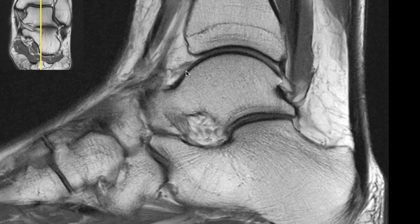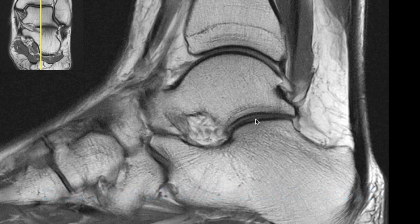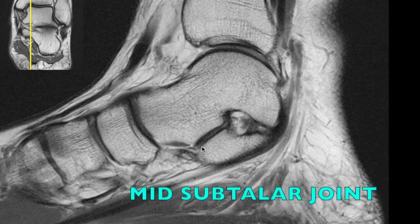Going further towards the midline, you can see the tibia articulating with the talus and the talus articulating with the calcaneum — this is the tibiotalar joint. The gray colored zone is the tibiotalar cartilage. This is the subtalar joint between the talus and calcaneum. The subtalar joint consists of three parts: anterior, mid, and posterior subtalar joint. This is the posterior subtalar joint, and you can very well identify talar and calcaneum cartilage on the proton density images.